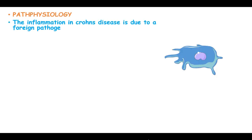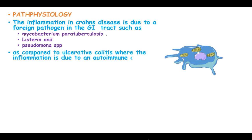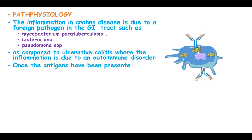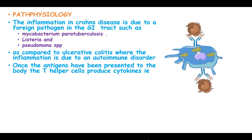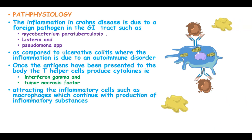The inflammation in Crohn's disease is due to a foreign agent in the gastrointestinal tract, such as Mycobacterium paratuberculosis, Listeria, and Pseudomonas species — as compared to ulcerative colitis, where the inflammation is due to an autoimmune disorder. Once the antigens have been presented to the body, the T helper cells produce cytokines such as tumor necrosis factor and interferon gamma. These cytokines attract inflammatory cells such as macrophages, which continue the production of inflammatory substances.